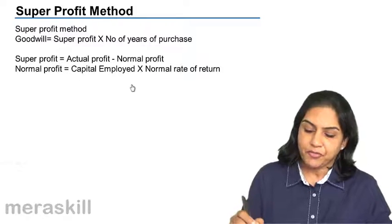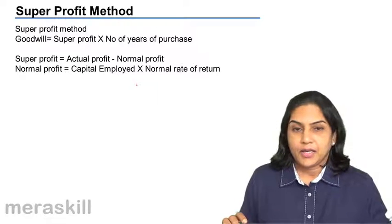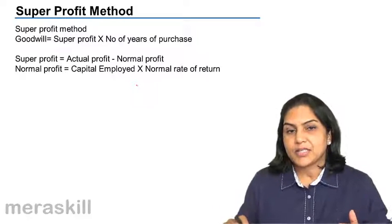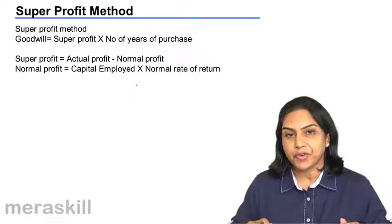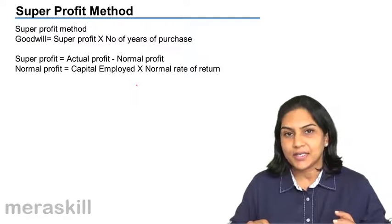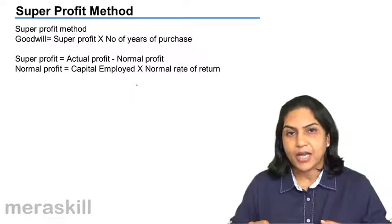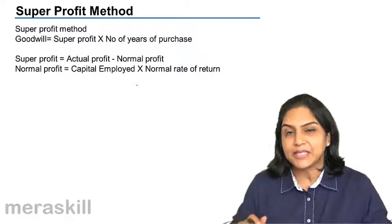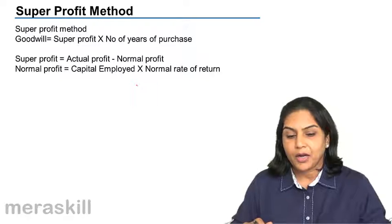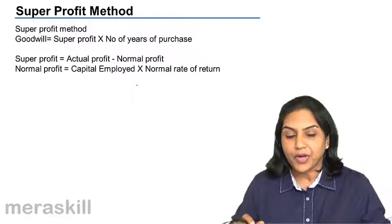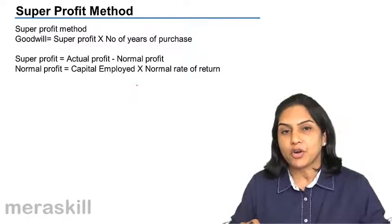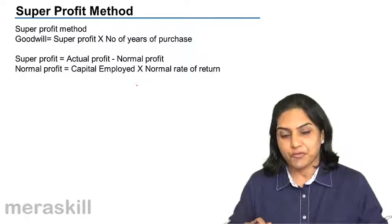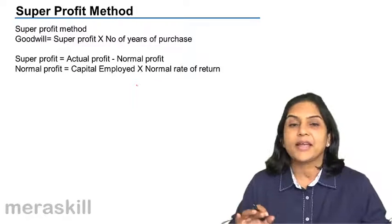Next is the super profit method. Every business makes a profit. The previous method, the average profit method, is not considered so suitable because every business after all makes profits and there is no need to compensate on account of goodwill for normally making profits. But if a business makes super normal profit — extra profits — then there is goodwill.